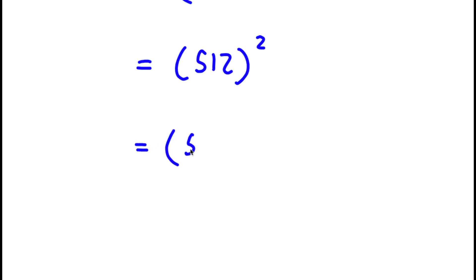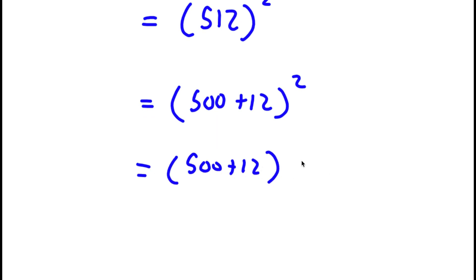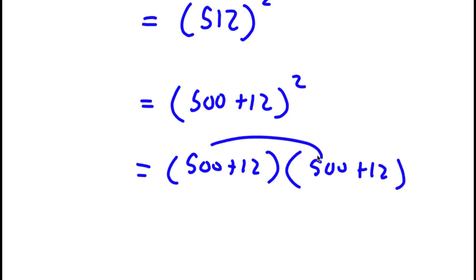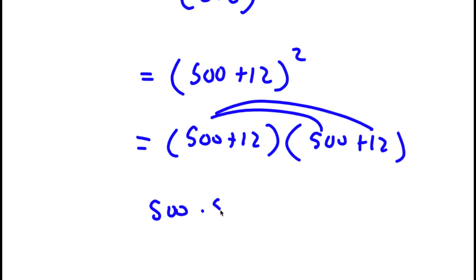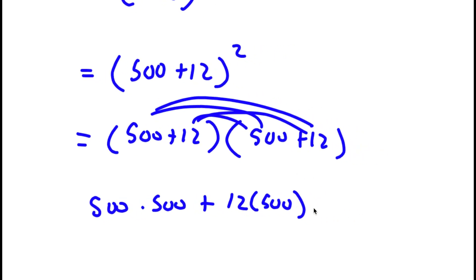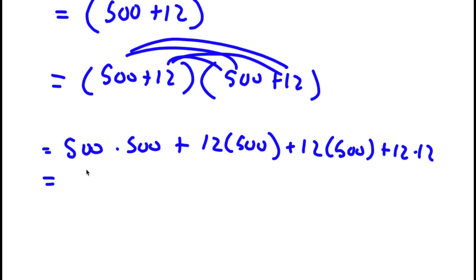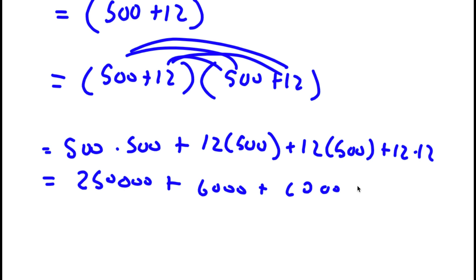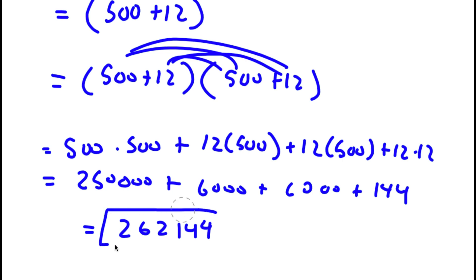So 512, I'm going to rewrite this as 500 plus 12 to the power of 2, which is the same thing as 500 plus 12 times 500 plus 12. Distributing the 500, I have 500 times 500 plus 12 times 500, then distributing the 12, plus 12 times 500 plus 12 times 12. So 500 times 500 is 250,000, plus 6,000, plus again 6,000, plus 144. And 6,000 plus 6,000 is 12,000, plus 250,000 is 262,000, plus 144 is 262,144. So this is my answer.